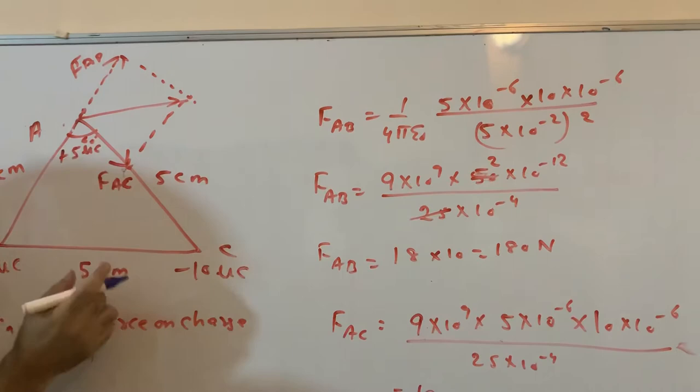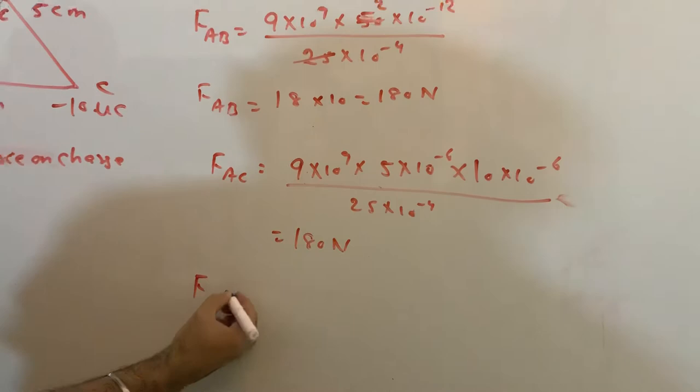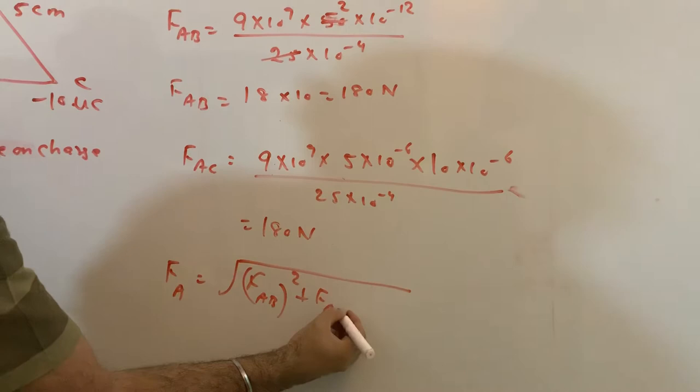So this angle will become 120°. F on A will be the resultant of √(F_AB² + F_AC²).